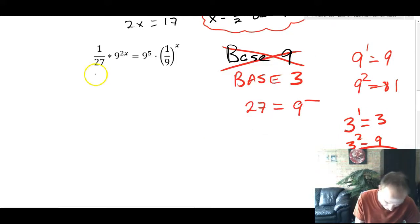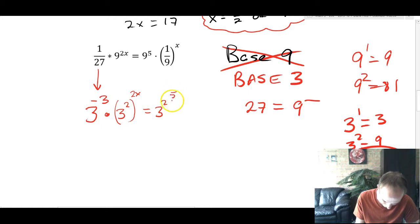All right. I'm going to write everything here with a common base. So 1/27 is 3^(-3). 9 is 3^2. And that's being taken to the 2x. 9, again, is 3^2. And that's to the fifth. I like to put parentheses around these powers of powers. I think it helps me remember to multiply here instead of adding or any other things we could do. And here we're multiplying by 9. We're doing base of 3. So this is 3^(-2) to the x.